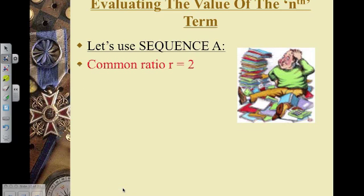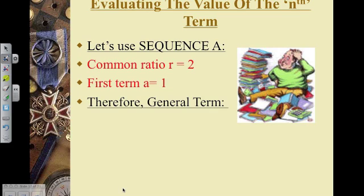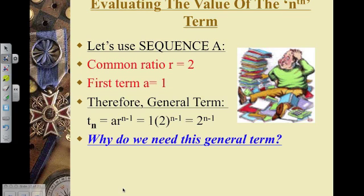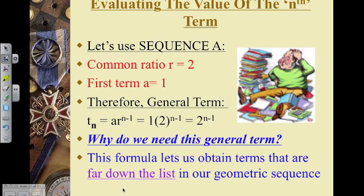Now, if we look at the sequence in our first example where the common ratio was 2 and the first term is equal to 1, we can write our general term formula like this: 1 times 2 to the power of n minus 1. This formula, the general term formula, is important because it lets us obtain terms that are far down the list.